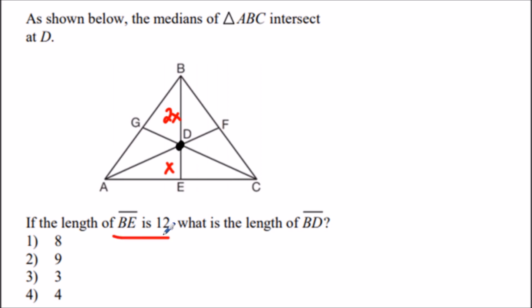Since BE is 12 units, we can set up the equation 2x + x = 12, which represents the entire segment. Solving this equation, we have 3x = 12, so x = 4.